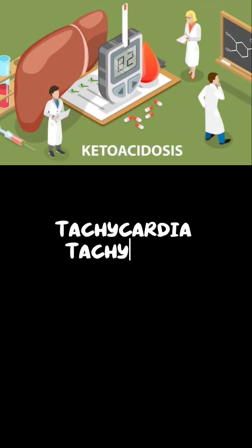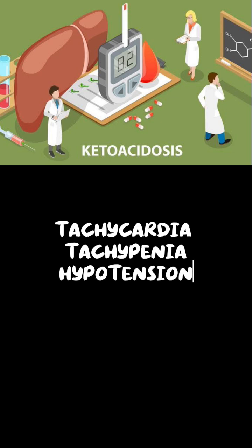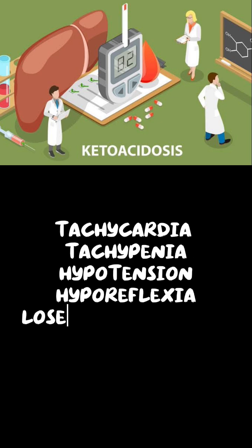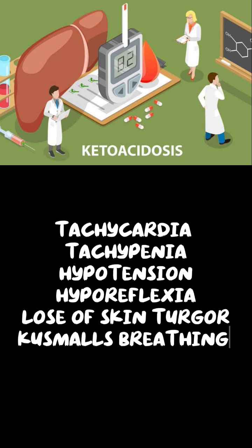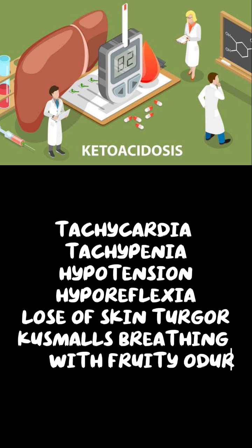Signs include tachycardia, tachypnea, hypotension, hyporeflexia, and loss of skin turgor. Kussmaul breathing is also present — that is deep breathing with a fruity odor — and it depends on the degree of acidosis in DKA.